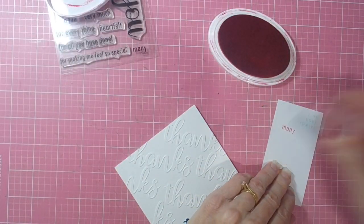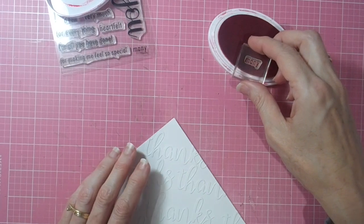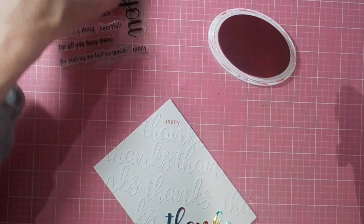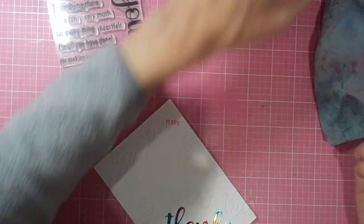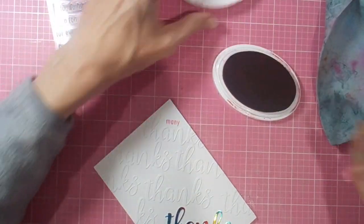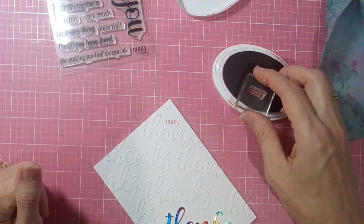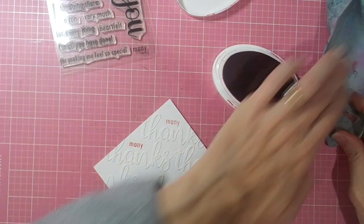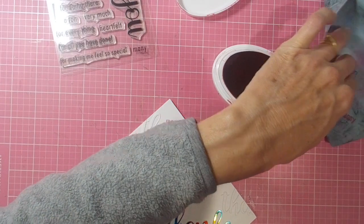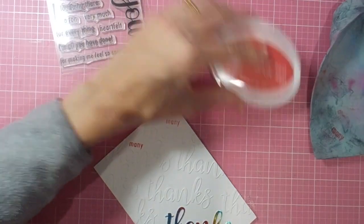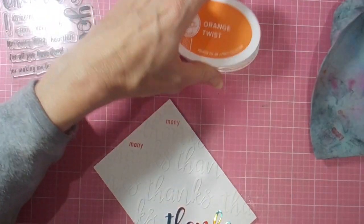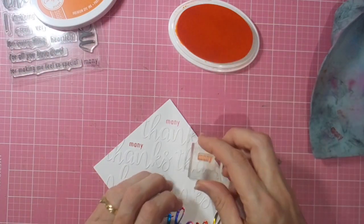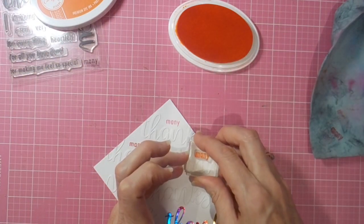To continue the rainbow theme, I'm going to stamp that over and over above my die-cut words in rainbow order. I would be using Mudra inks, but I don't unfortunately have them yet, so I'm just using something else for now. Adding 'many' over and over for my card, working my way down, filling in where there might be some gaps.